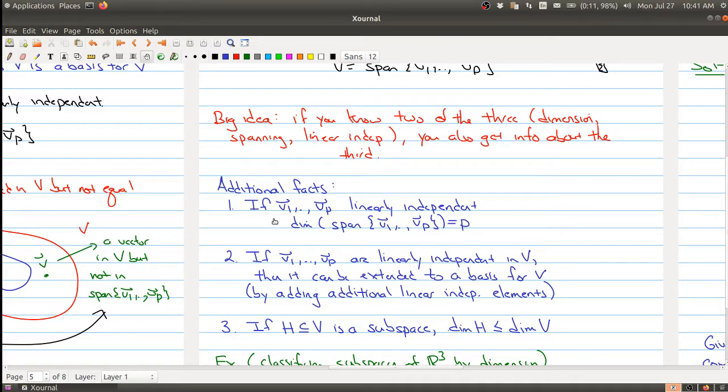The first fact is saying that if you have a collection of vectors that's linearly independent and you take the span of those vectors, so that gives you a subspace, the dimension of that span space is simply P, the number of vectors.